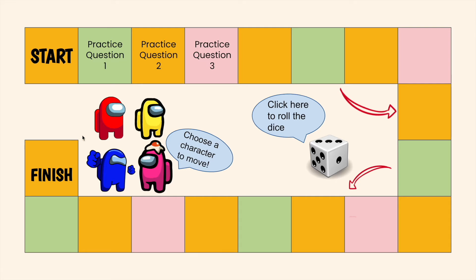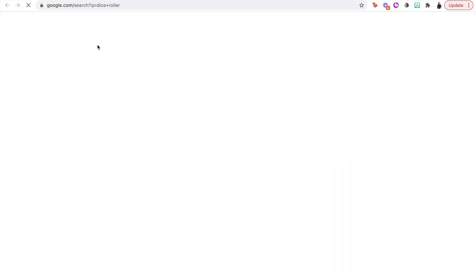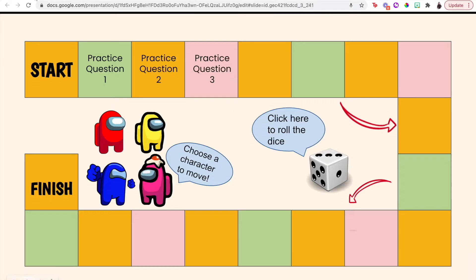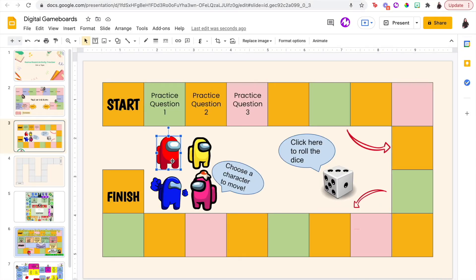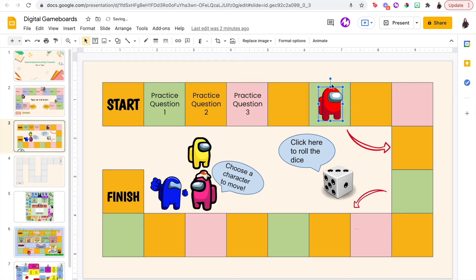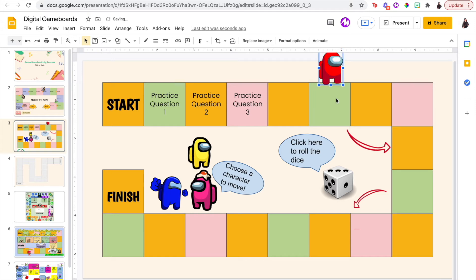Once they have chosen their character, you're going to instruct them to roll the dice. If they click on the dice image, it'll take them to a link that rolls a number for them. The student will then move their character to correspond with the number they just rolled — one, two, three, four, five — and whatever practice question is in that spot, the student would work on or practice.